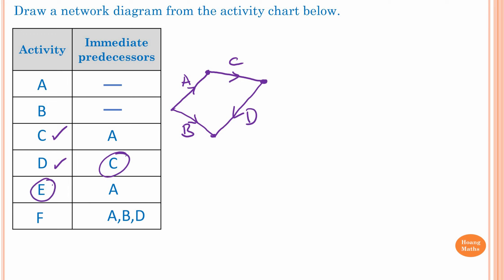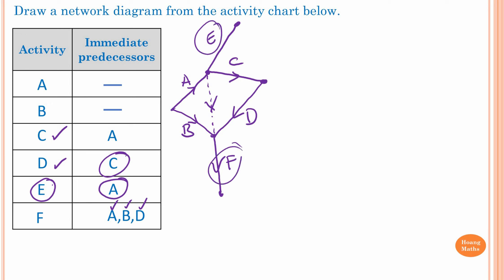For Activity E, we need to complete Activity A first, so I draw E out here — this is Activity E. For Activity F, we need to complete Activities A, B, and D first. We already have B and D, so I write F here. We then need to connect A to F as well, but we need a Dummy Activity — because drawing a solid line would mean it's an actual activity. So this is a Dummy Activity with zero weighting. We also need to connect the last two activities, E and F, together.